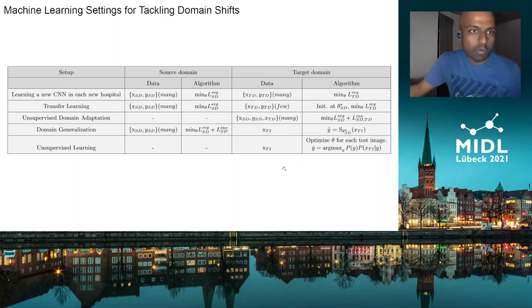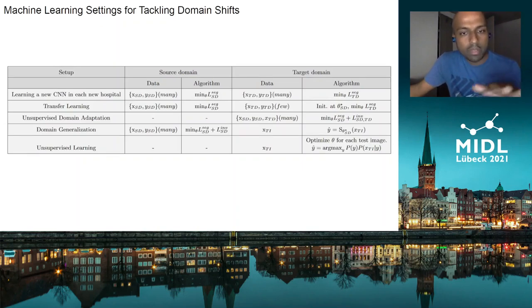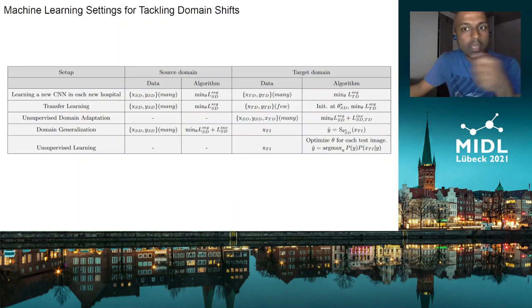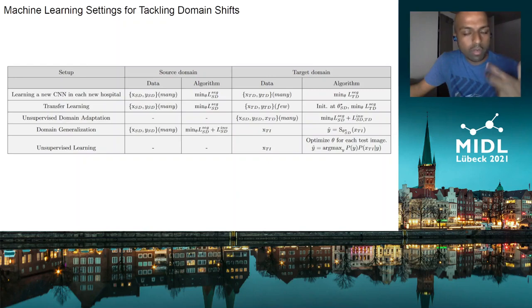This is a very well-known problem in the literature, and it has been looked at in a large number of settings. Here we try to list these settings and look at how they differ in terms of what needs to be done in the source domain and the target domain, in terms of the data required and the kind of algorithm that needs to be run.